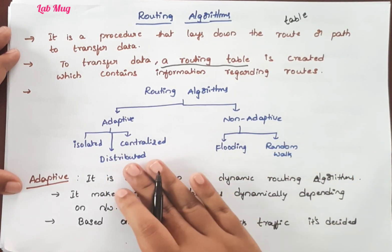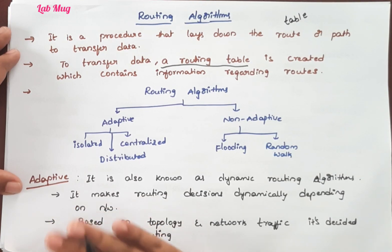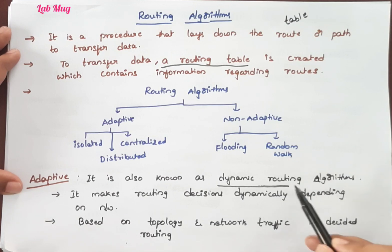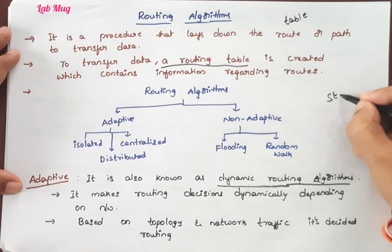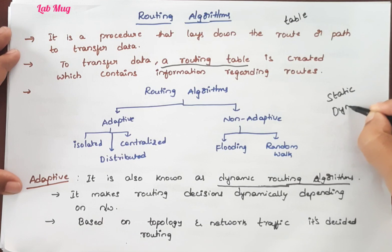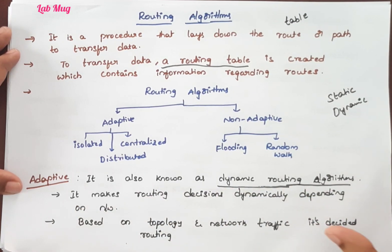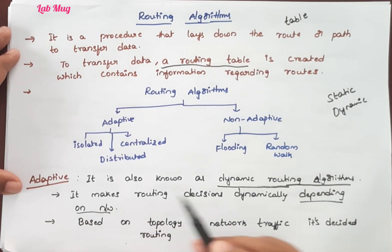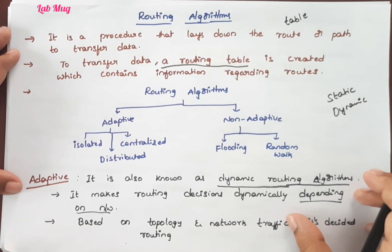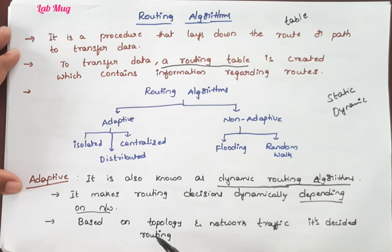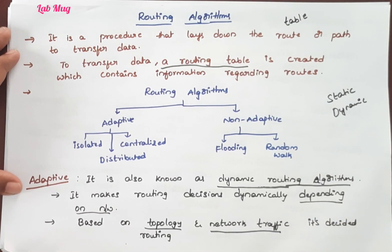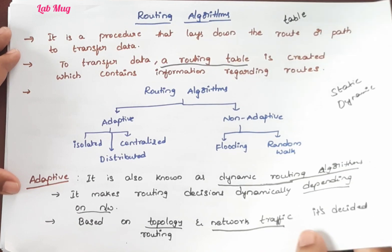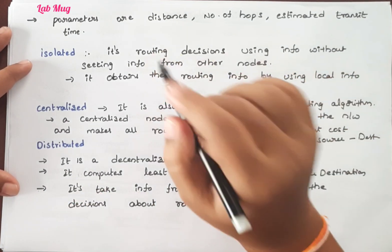Adaptive algorithms are also known as dynamic routing algorithms — this is the name we use to call them. As we discussed in the previous class about static routing and dynamic routing, adaptive means dynamic routing. In dynamic routing, routing decisions can change dynamically depending on the network — based on network topology and network traffic.